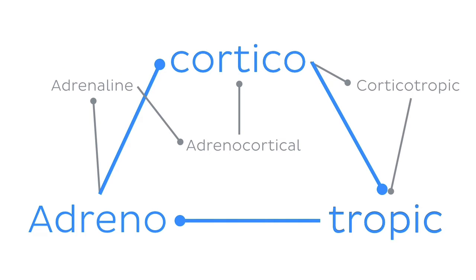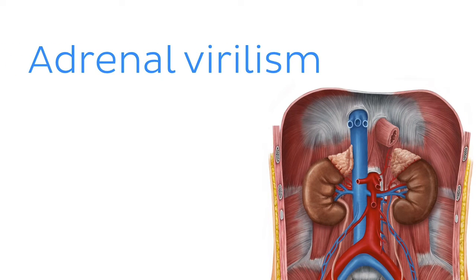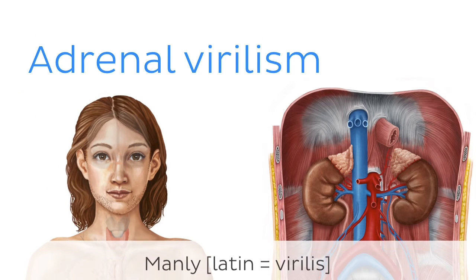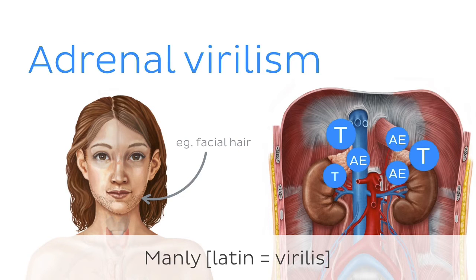Now it's time to take a look at some medical conditions associated with adrenal glands. Let's start with adrenal virilism. It refers to the development of secondary male sexual characteristics in females or abnormally premature development in males. It is caused by excessive production of androgenic or male hormones by the adrenal glands, which normally only produce it in small amounts.